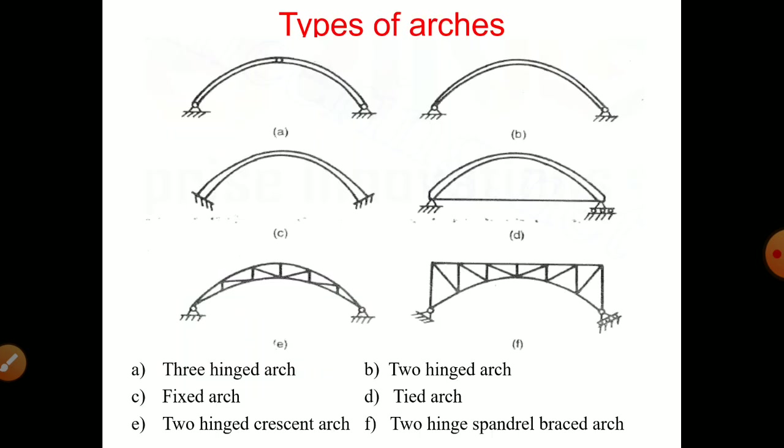Types of arches: First one, you can see three-hinged arch. B, two-hinged arch. C, fixed arch. D, tied arch. E, two-hinged arch with crescent shape. Then last one is two-hinged spandrel braced arch. You can see the first three-hinged arch is statically determinate, and others are all indeterminate structures.